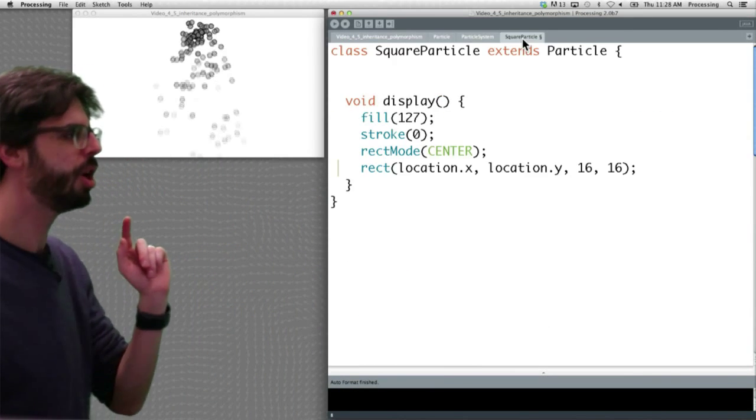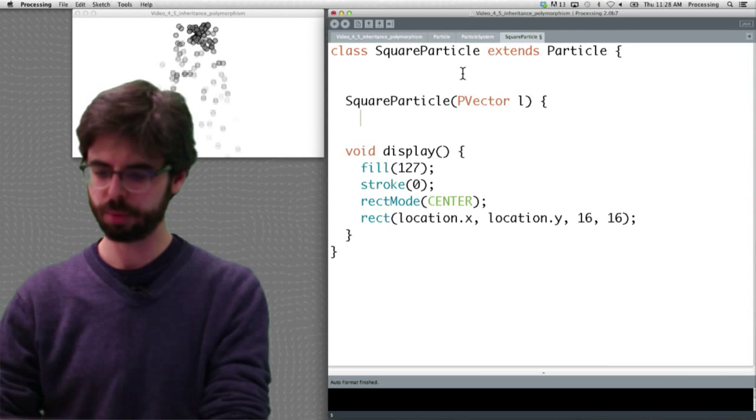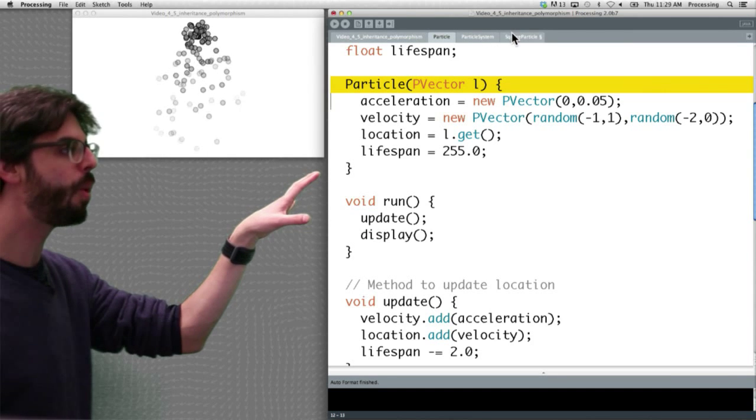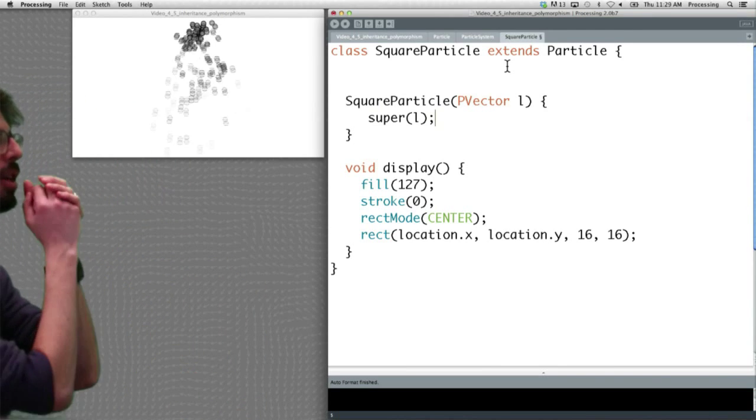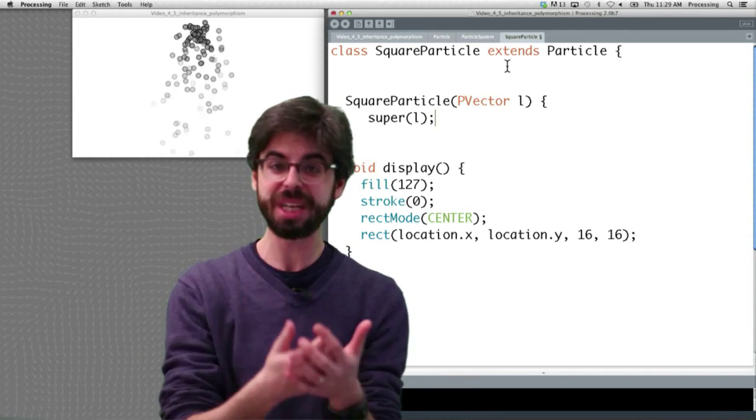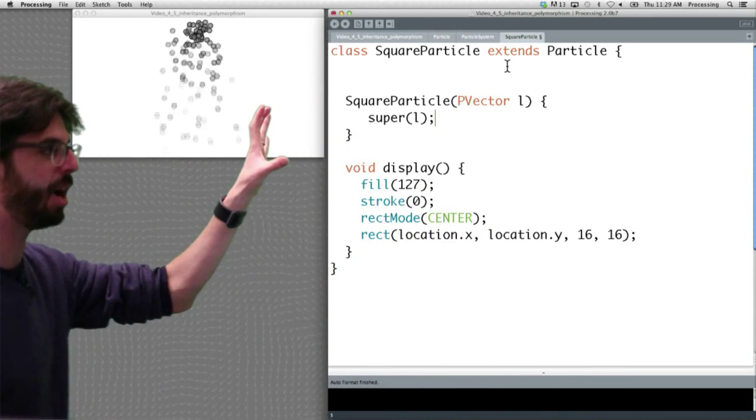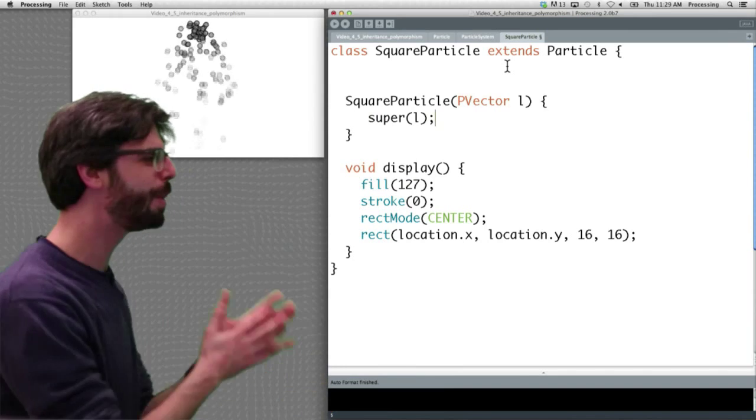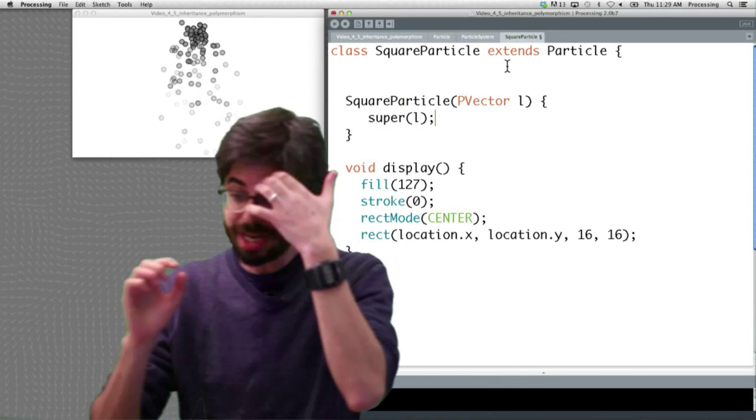How do we inherit a constructor? Well, it turns out that we do always have to write the constructor, and I can say square particle p-vector L, which is exactly the same as the signature for the particle constructor. But what I can say is super L. I can execute this constructor in the parent class with the keyword super, and then I can give it the same arguments. So if I got this p-vector argument, I want to call the super parent constructor with the argument L. So this square particle now is going to be born in exactly the same way that a particle is born. I don't know why I'm talking in terms of birth, but that's what the constructor really is. It's the moment of creation. It's when the object is created.